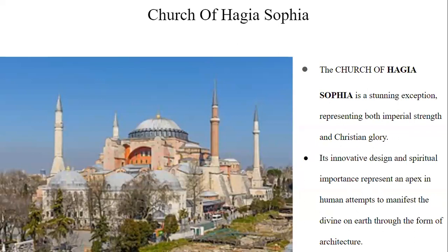To conclude this presentation, we will look at the Hagia Sophia from the Byzantine Empire. Following the deadly Nika riots in 532, Justinian launched a major building and repair effort in Constantinople, and little of the ancient imperial city's architectural designs survived. The church of Hagia Sophia is a stunning exception, representing both pure strength and Christian glory. Its innovative design and spiritual importance represent an apex in human attempts to manifest the divine on earth through architecture. As a bridge between the earthly and the holy, Hagia Sophia stands as a testament to the Byzantine Empire's inventiveness, faith, and creative vision encompassing cultural, technical, and religious objectives.